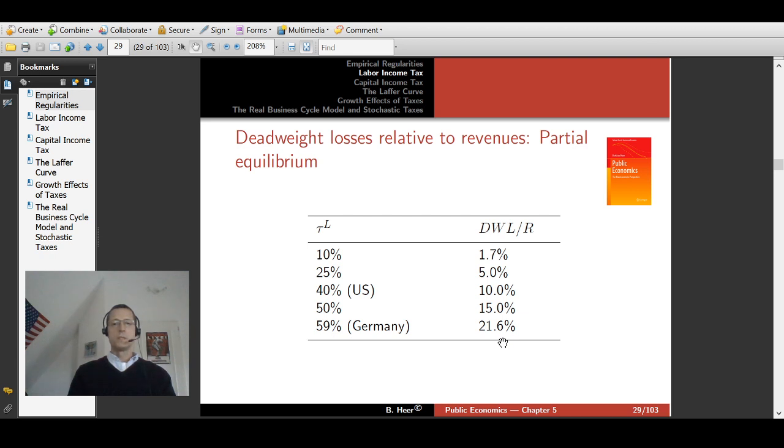If we consider the average wage earner in the United States, which according to the Tax Foundation, a non-profit think tank in the U.S., amounted to revenues of $17,600 in 2018, then the excess burden, the money wasted because of the imposition of the taxes on labor income, amounts to $1,760 for the average worker in the United States. In Germany this amount is more than twice as high. Similarly in Belgium, so consider yourself lucky if you live in the United States.